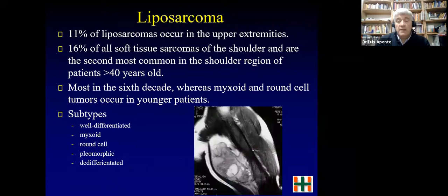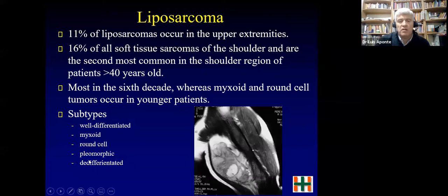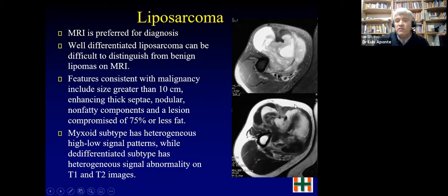Liposarcoma is common but more frequent in the lower extremity. It represents 11% of upper extremity soft tissue sarcomas, with 16% of tumors around the shoulder. These are older patients, though not as old as UPS. The well-differentiated type is similar to a lipoma and treated with wide resection only. The myxoid type is intermediate grade, while round cell, pleomorphic, or dedifferentiated types are high grade. The main differential is with lipoma.